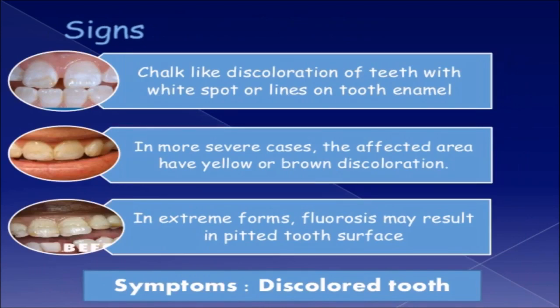Signs: Chalk-like discoloration of teeth with white spots or lines on tooth enamel. In more severe cases, the affected areas have yellow or brown discoloration. In extreme forms, fluorosis may result in a pitted tooth surface.